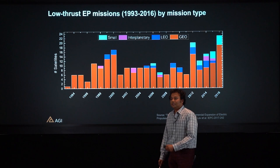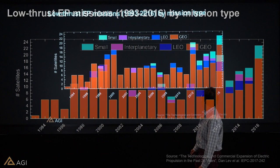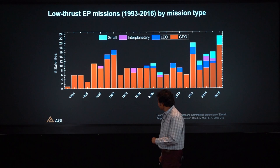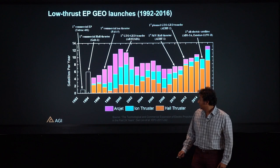A bar chart shows Low-Thrust electric propulsion systems by mission type. Most missions using Low-Thrust have been GEO missions since 1994, with some using Low-Thrust for interplanetary transfers and small satellites, as well as LEO, but mostly GEO. Another bar chart shows Low-Thrust electric propulsion GEO launches specifically by thruster type, and most of the recent thruster types in use are Hall-Thrusters.